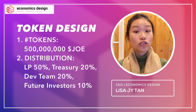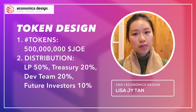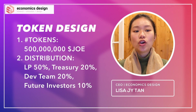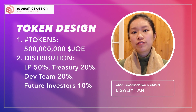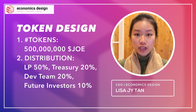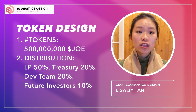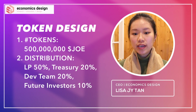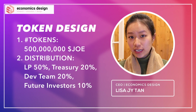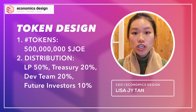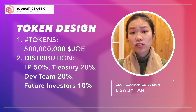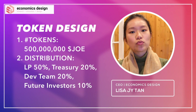There are a total of 500 million JOE tokens. The split is: 50% to liquidity providers — essentially given to the community — 20% to the treasury, 20% to the dev team, and 10% to future investors. The 20% in the treasury relates to protocol-controlled value (PCV) — it's the first part of the protocol's PCV. The dev team's 20% rewards those who built the product. The future investors' 10% could go to investors, partners, or similar arrangements.